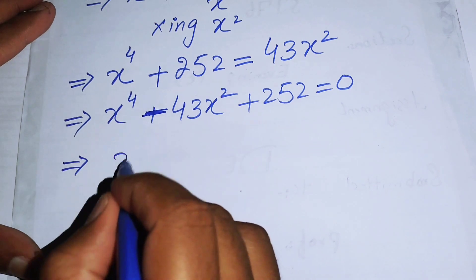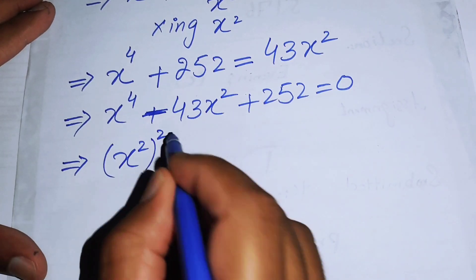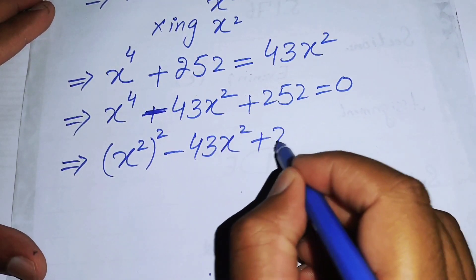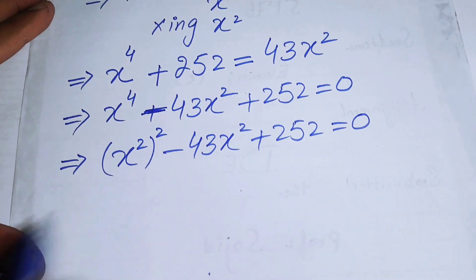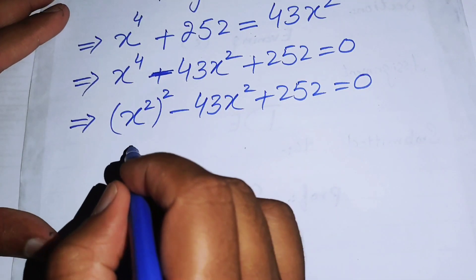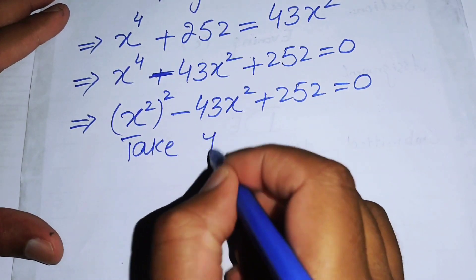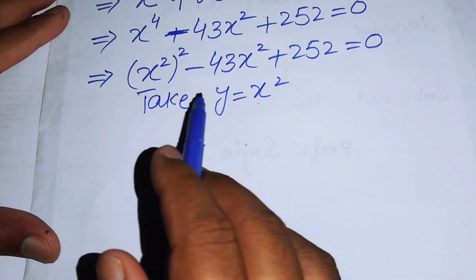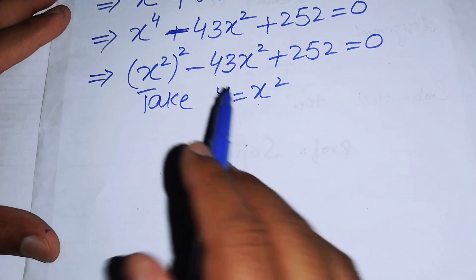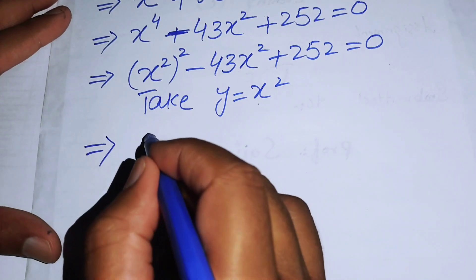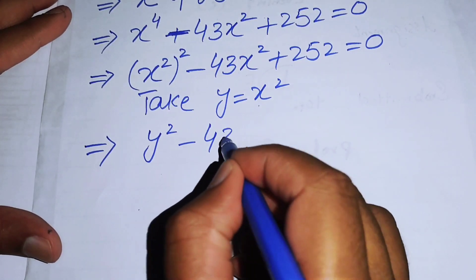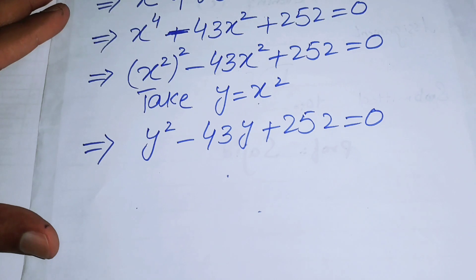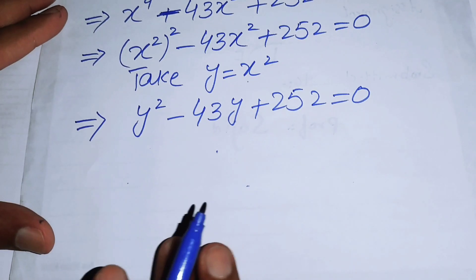I will convert this equation into quadratic form. I rewrite x⁴ as (x²)², so the equation becomes (x²)² - 43x² + 252 = 0. Now I let y = x², and the polynomial becomes the quadratic y² - 43y + 252 = 0.